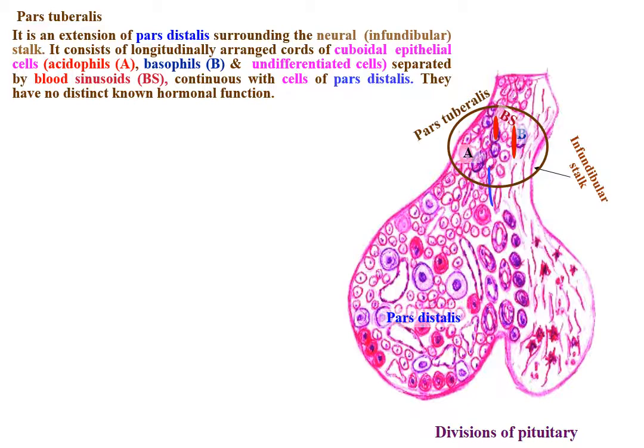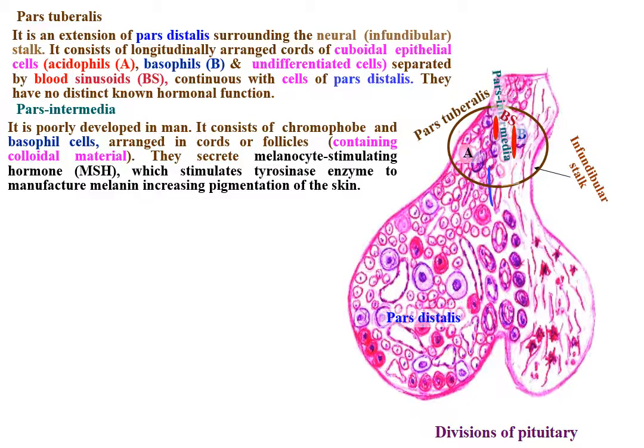Pars intermedia is poorly developed in man. It consists of chromophobe and basophil cells arranged in cores or follicles containing colloidal material. They secrete melanocyte-stimulating hormone (MSH), which stimulates tyrosinase enzyme to manufacture melanin, increasing pigmentation of the skin.